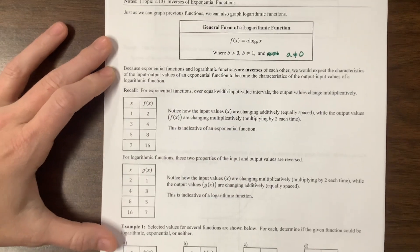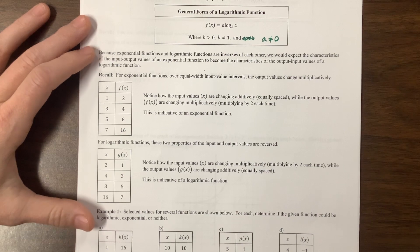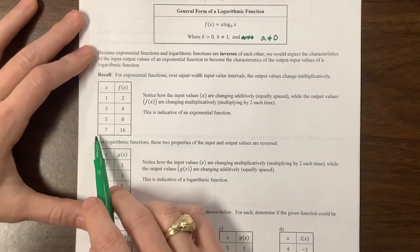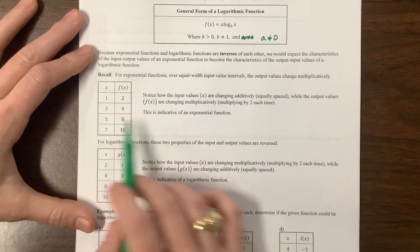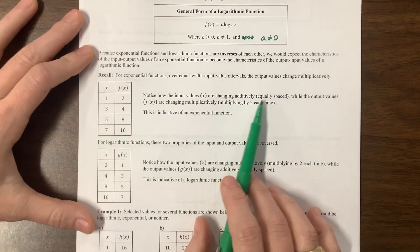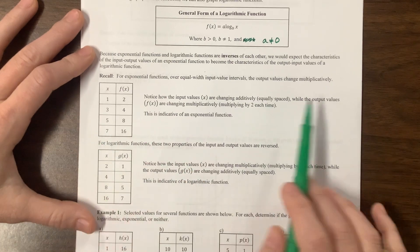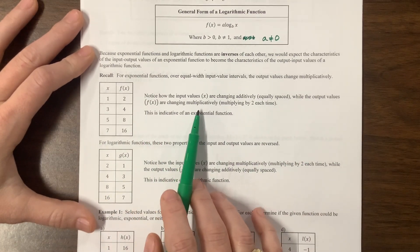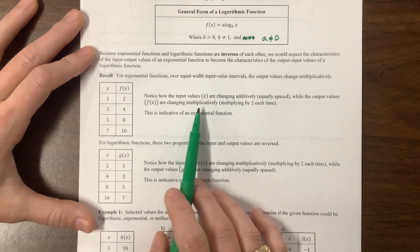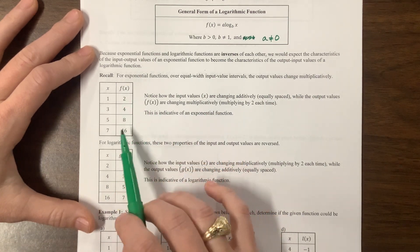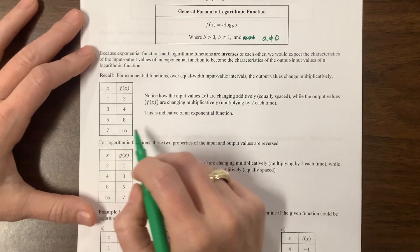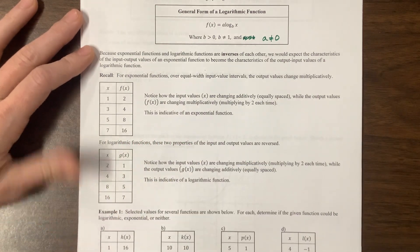So now what we're looking at: for an exponential function, the x values may increase linearly — they're changing additively, equally spaced — while the output values are changing multiplicatively. Basically, we're multiplying here. These are increasing exponentially while these increase linearly. So this would be an exponential function.